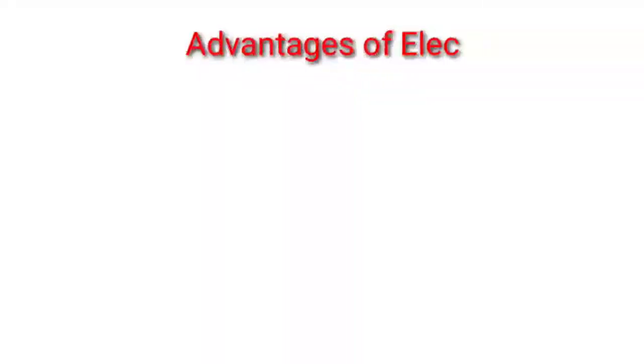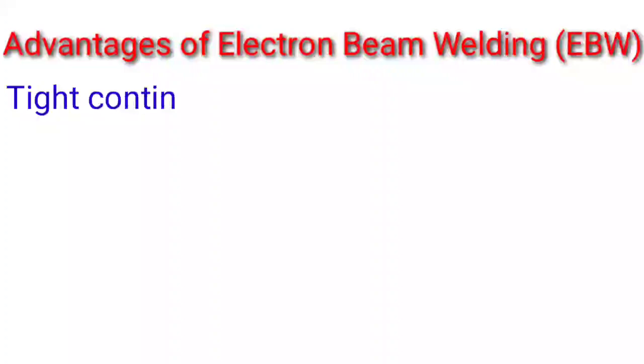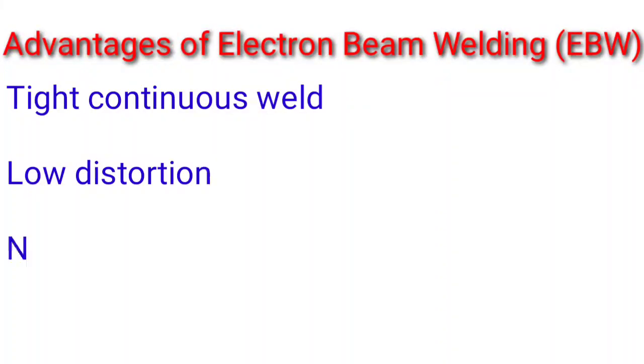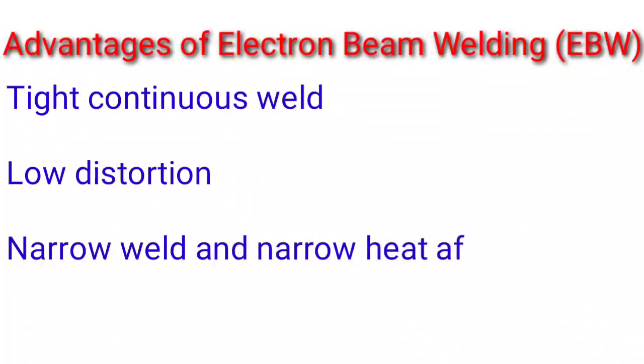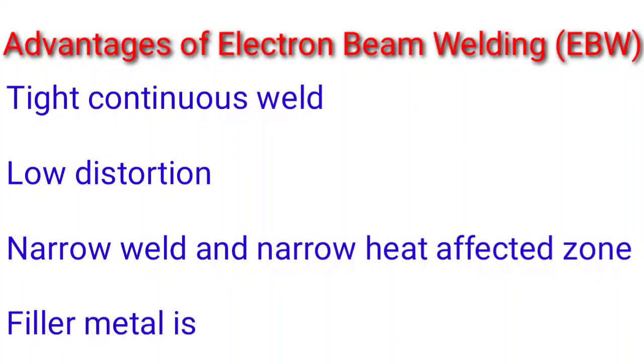Advantages of electron beam welding include tight continuous weld, low distortion, narrow weld and narrow heat affected zone, and filler metal is not required.